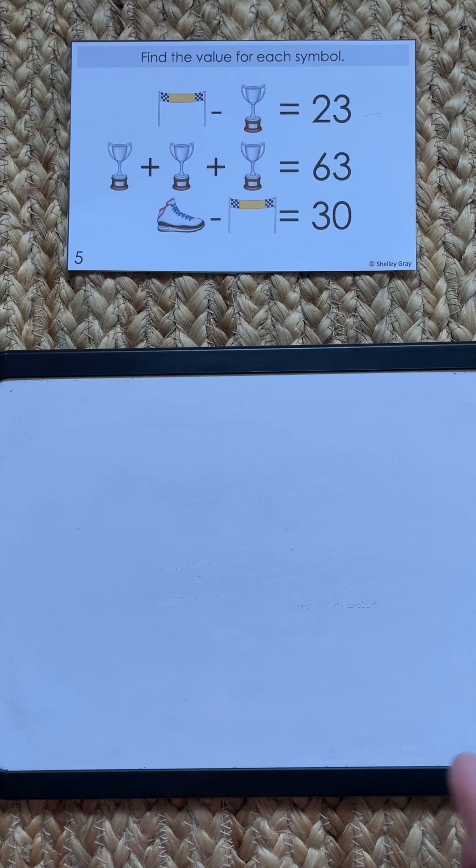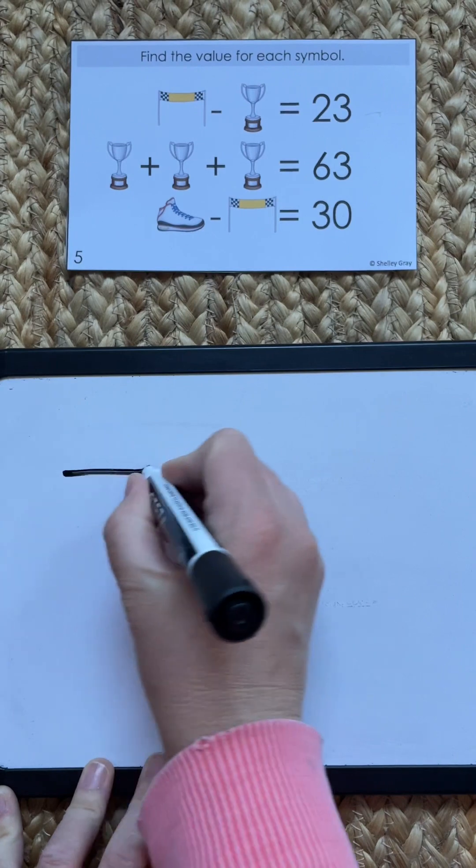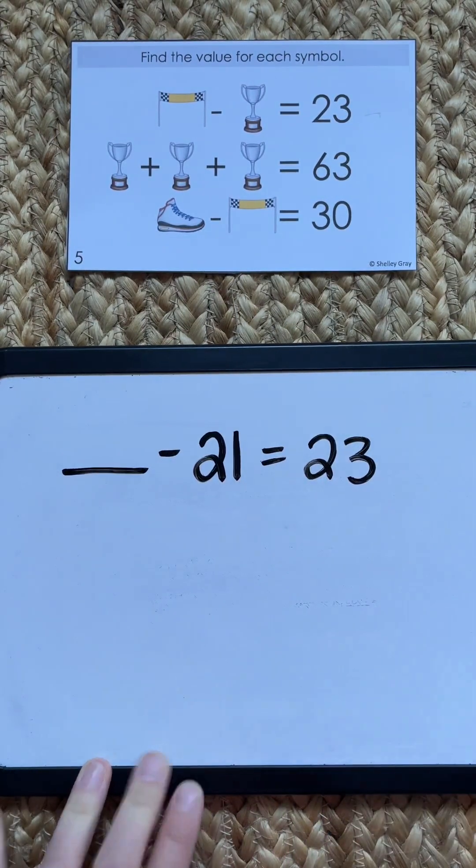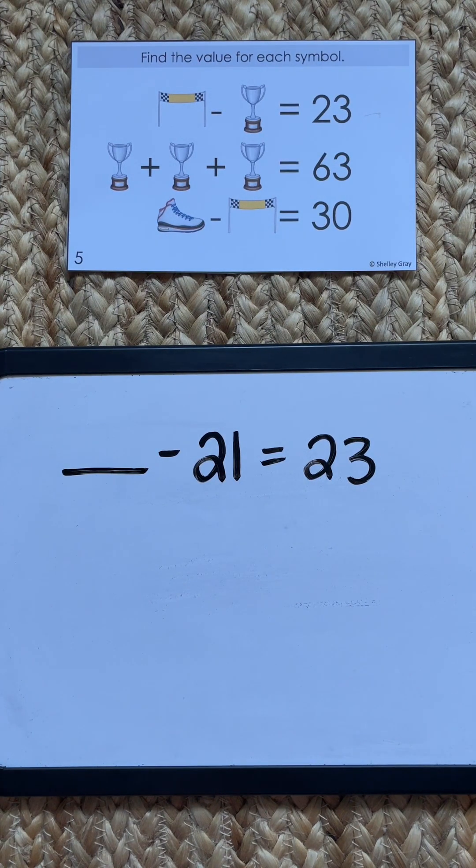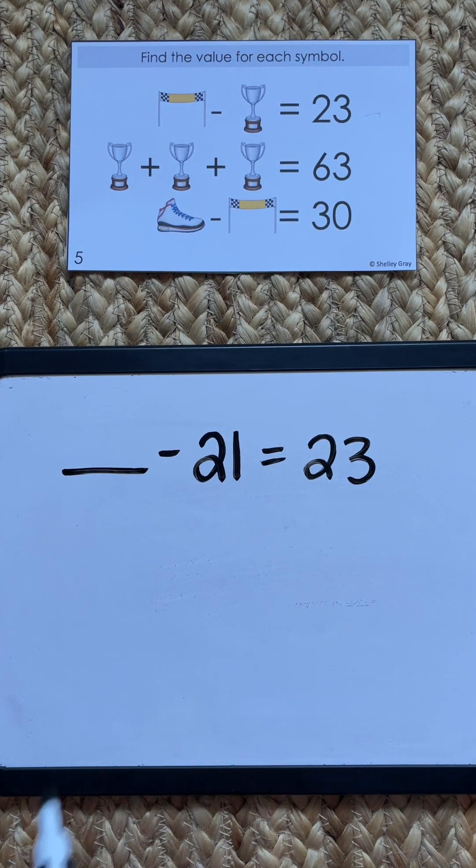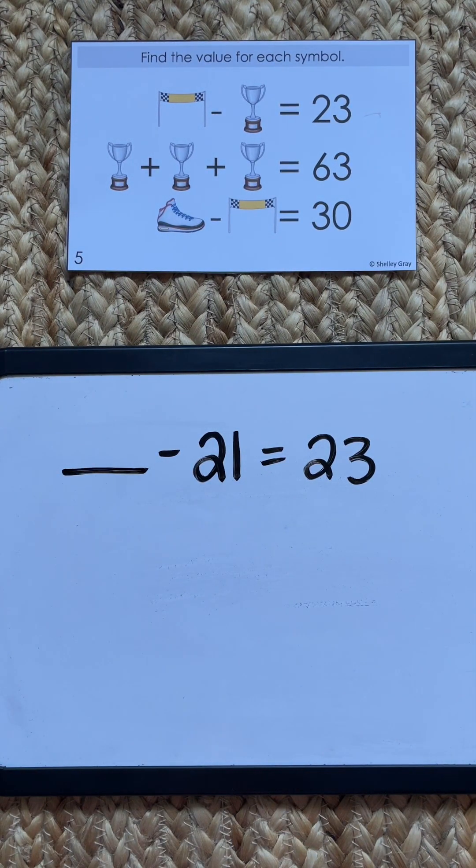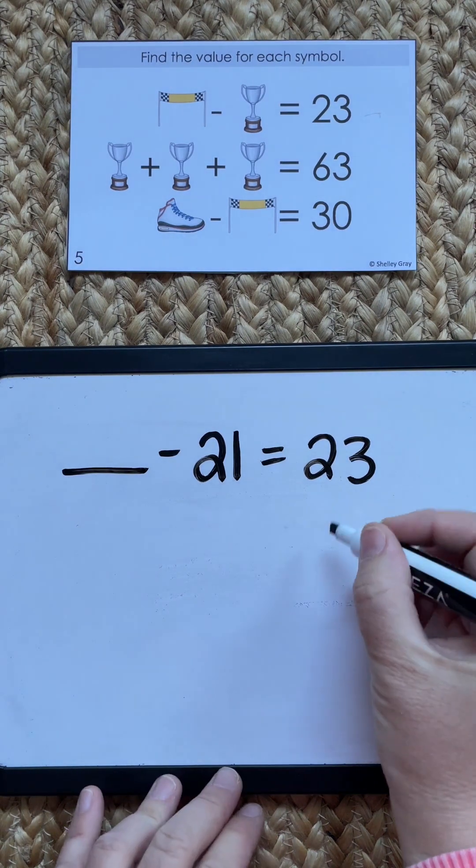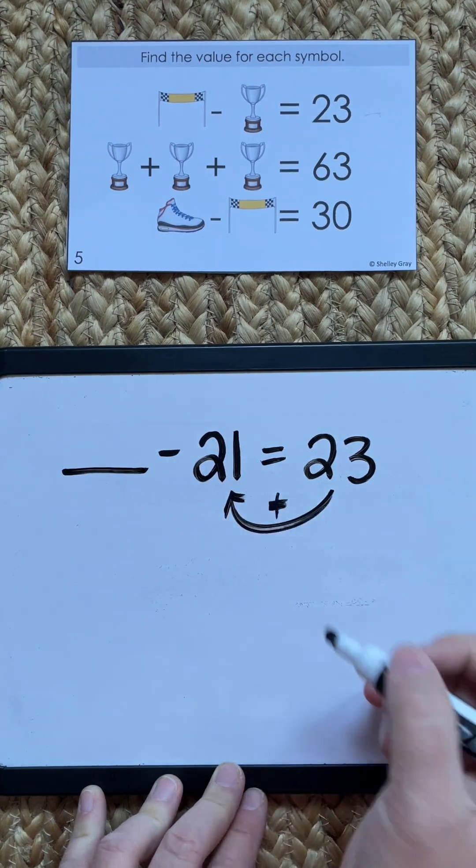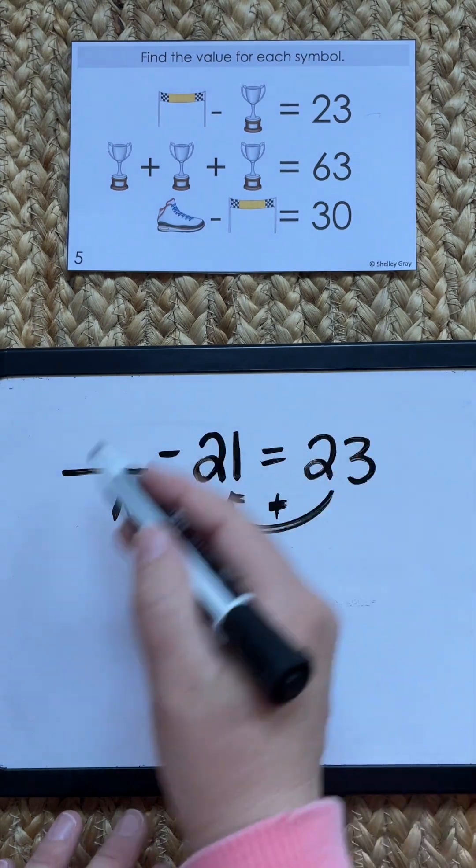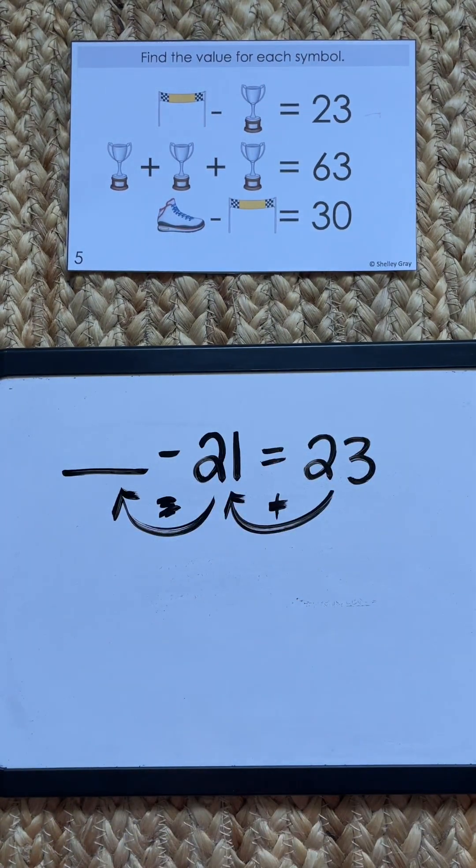Now this is a fantastic way to teach kids about inverse operations - how addition and subtraction work together. So we know that something subtract 21 equals 23. Now again, you might have some kids that just try to plug in some random numbers, trial and error, you know put random numbers in here and see if it works to make 23. Clearly that's not the most effective way to do this. Where we want kids to get is to the point where they realize that 23 plus 21 is going to give us this number.